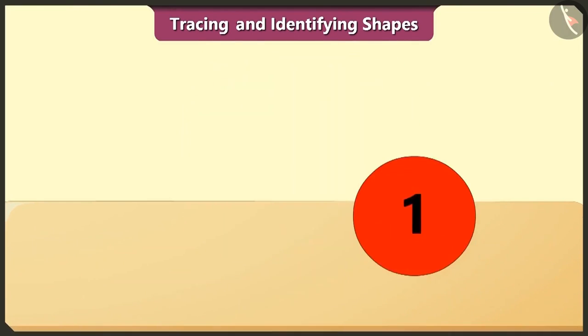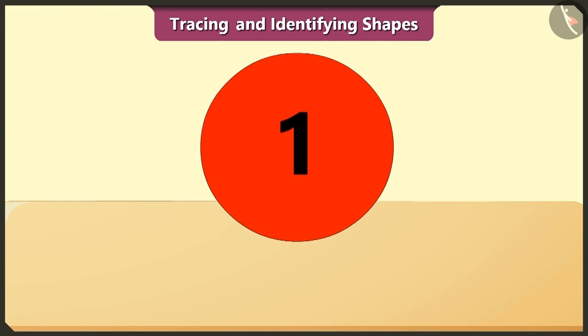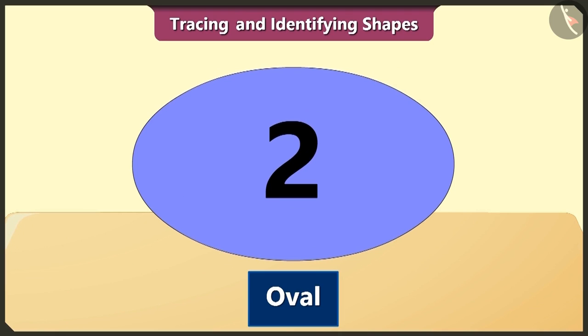Here, the circle is first in order. The oval is second in order. This shape is like an elongated circle. It is also called ellipse.